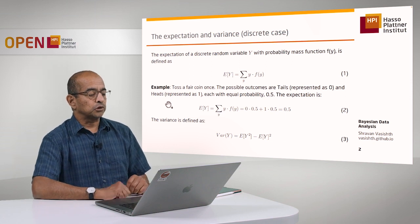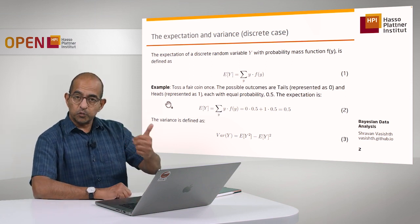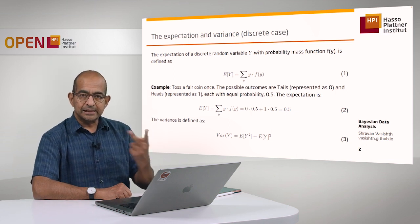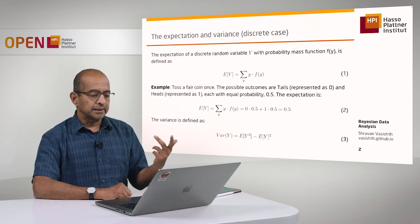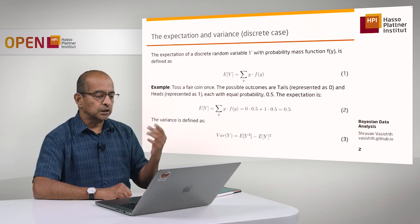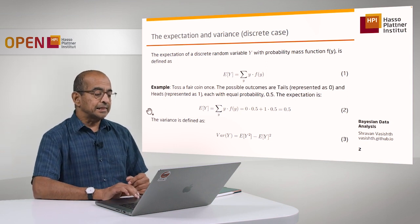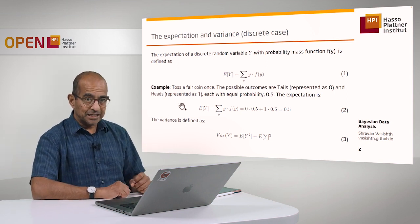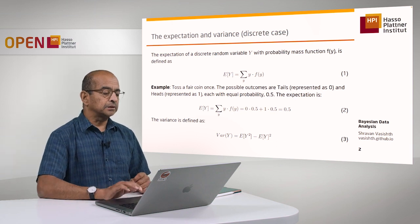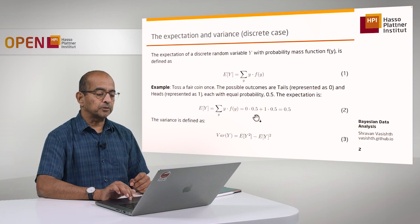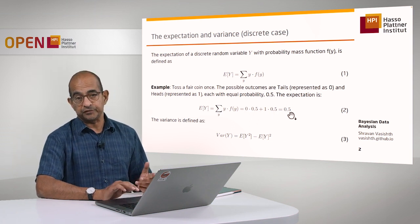For example, if you toss a fair coin once — that's your Bernoulli situation — the possible outcomes are tails or heads, and the probability of each outcome is 0.5. In that case, the expectation of that particular random variable is 0 multiplied by its probability plus 1 multiplied by its probability, which gives you 0.5.